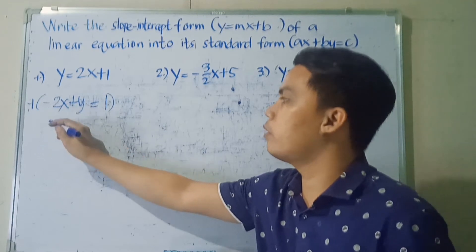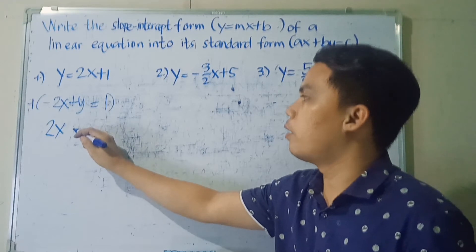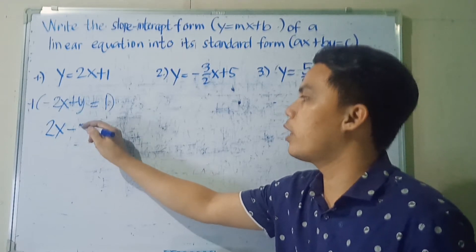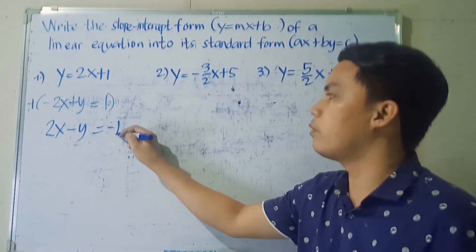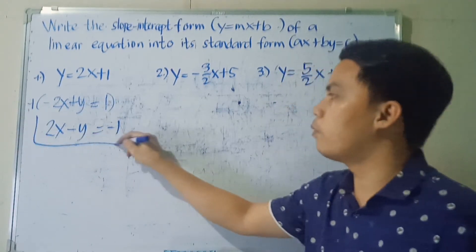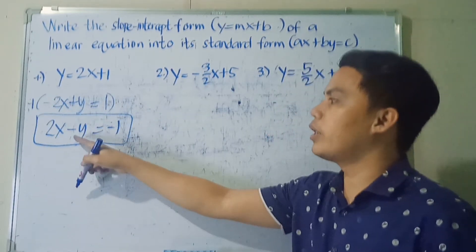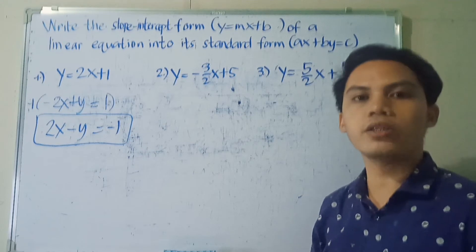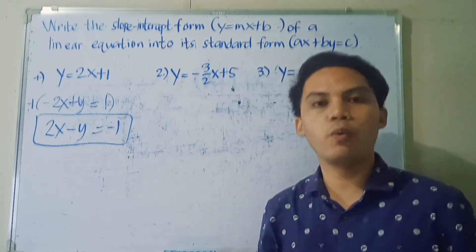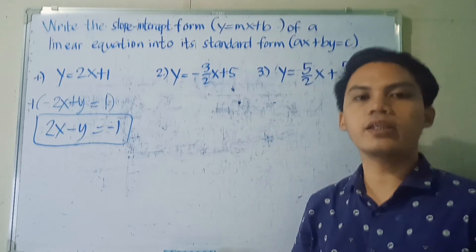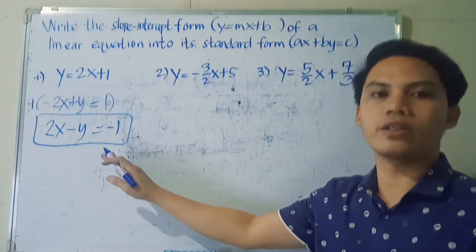Negative 1 times negative 2X becomes positive 2X. Negative 1 times Y becomes negative Y. Negative 1 times positive 1 gives negative 1. So the final answer is 2X minus Y is equal to negative 1. It's okay for Y and the constant term to be negative, as long as the numerical coefficient of variable X is always positive, and there are no fractions in the final answer.